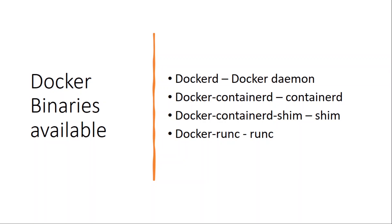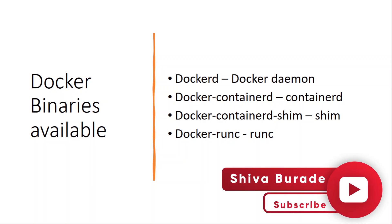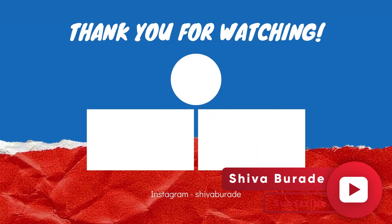These are the available Docker binaries you can download. The Docker Daemon binary is called dockerd, and containerd is docker-containerd. You can download all these binaries and use them according to your needs. If you have any doubts, write them in the comment section and don't forget to subscribe. Thank you and have a nice day!